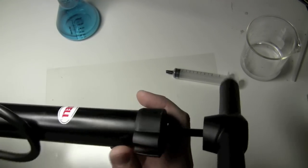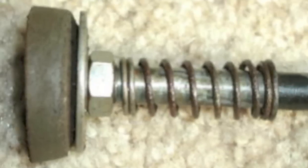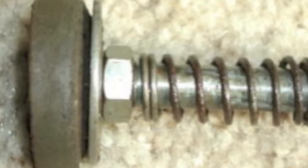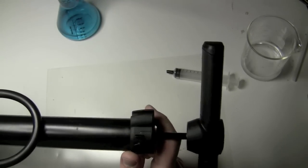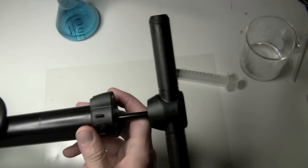Building a vacuum pump once was easy. You just get a bicycle pump like this one and reverse the rubber seal at the end of the plunger. Modern pumps have a different construction and reversing them is a bit more complicated than it was before.